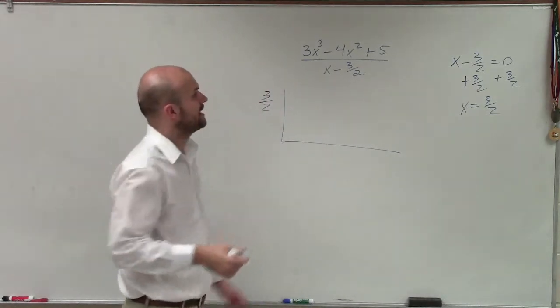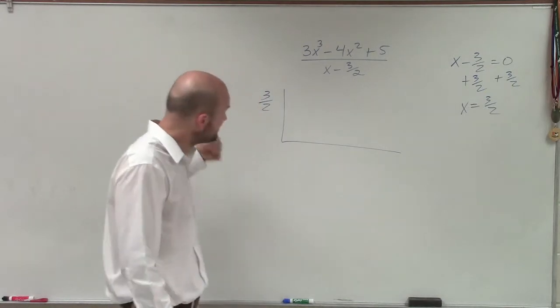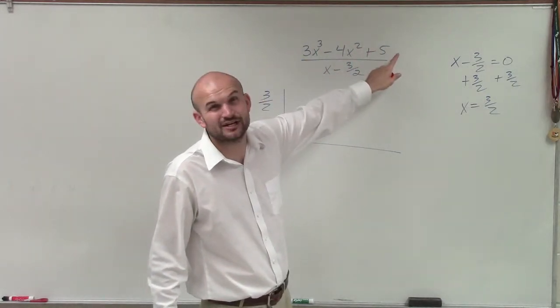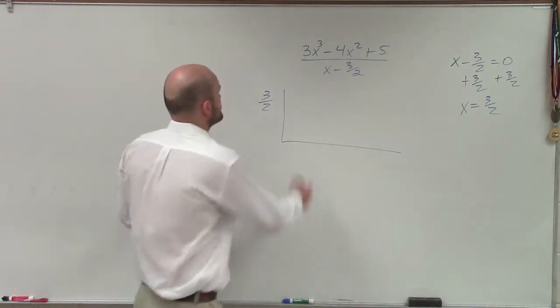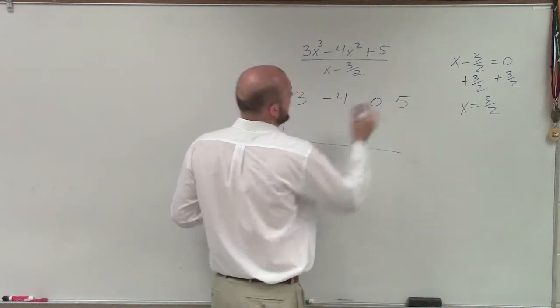Now I need to make sure that I include the coefficients of every single term of my dividend. Now I notice that I have 3, 2. I don't have an x, a linear x term, so I need to make sure I include a coefficient of zero. So I'll write 3, -4, 0, and then 5 as my constant.